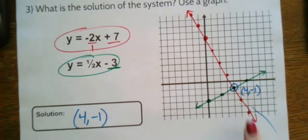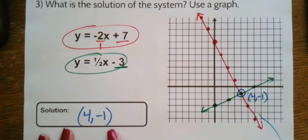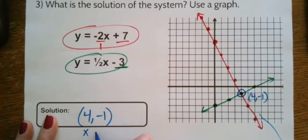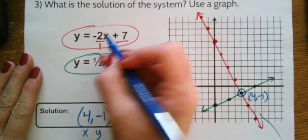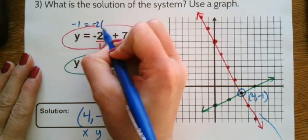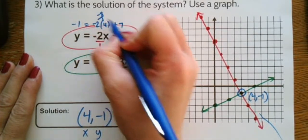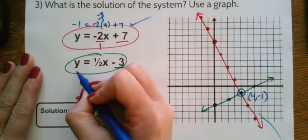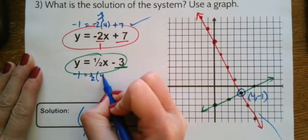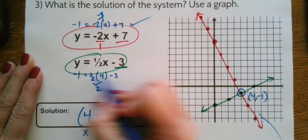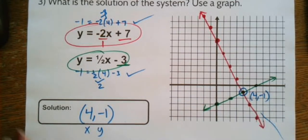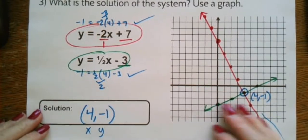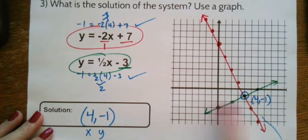To check the solution (4, −1), I plug it into both equations. First: −1 equals −2 times 4 plus 7, which is −8 plus 7 = −1. That checks out. Second: −1 equals 1/2 times 4 minus 3, which is 2 minus 3 = −1. That also checks out. So both lines travel through that point and (4, −1) is confirmed as the intersection point. This system has one solution.